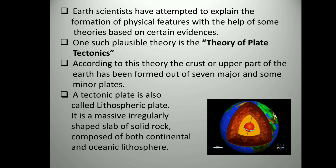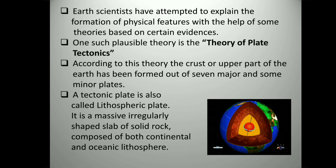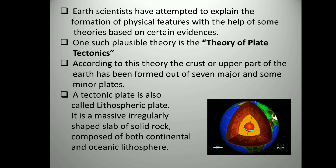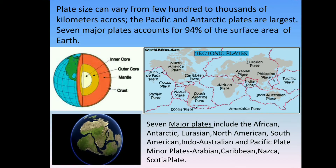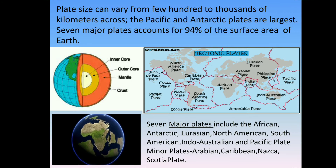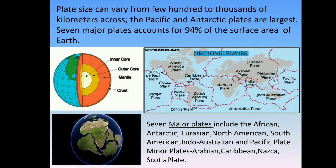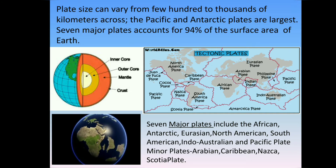According to the theory of plate tectonics, the crust or upper part of the earth has been formed out of seven major and some minor plates. A tectonic plate is also called a lithospheric plate. It is a massive, irregularly shaped slab of solid rock composed of both continental and oceanic lithosphere. Plate size can vary from a few hundred to thousands of kilometers across. The Pacific and Antarctic plates are the largest, and seven major plates account for 94% of the surface area of earth.